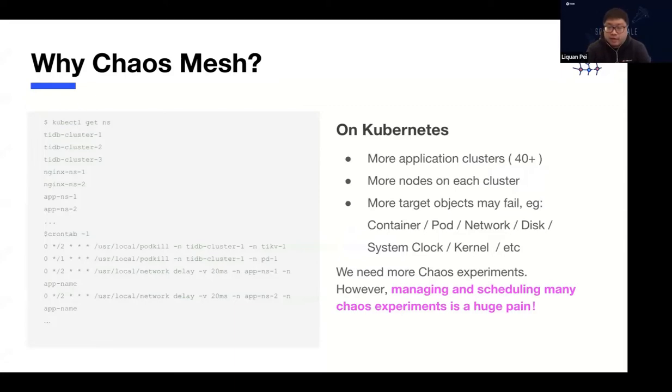Why did we evolve from Schrodinger to ChaosMesh? I think it's related to the Kubernetes environment, as well as some specialties about the container environment. Typically in a Kubernetes cluster, you have many application clusters, compared with deploying in the virtual machine environment. There you already have larger scale, there may be more nodes. In that environment, many target objects can fail. For example, the containers, the pods, network, disk, even system clocks. And also because of this, we do need to run more experiments, because there are more applications there. The challenge is, how to manage and schedule those experiments in an effective way, so that they don't interfere with each other and don't break things in a way that cannot be controlled.